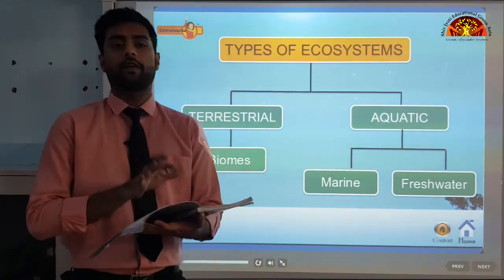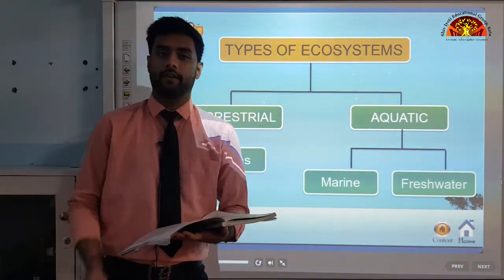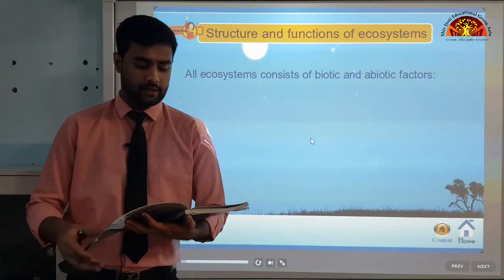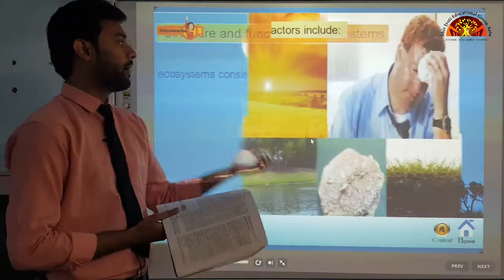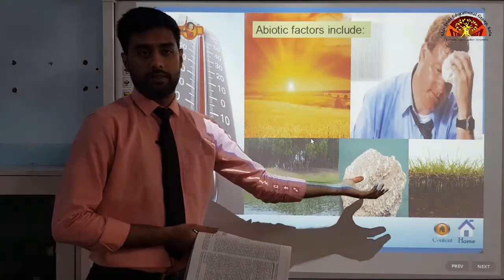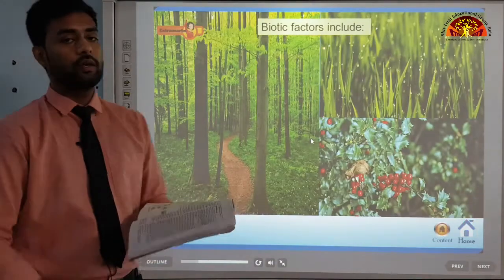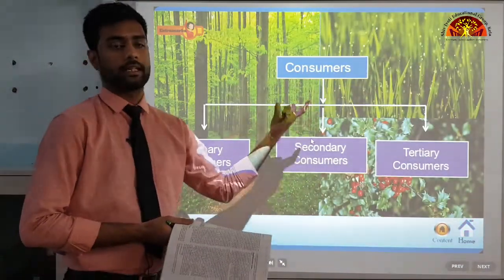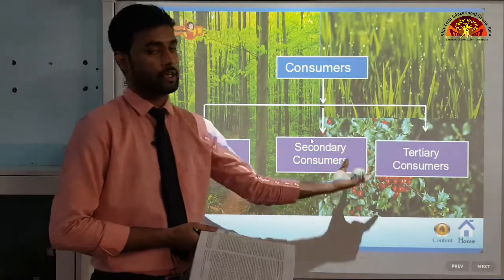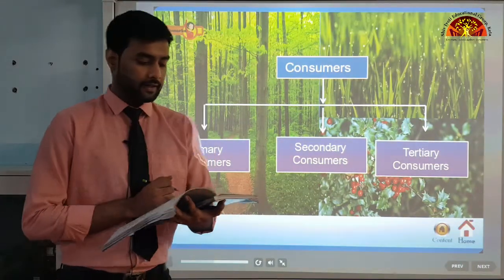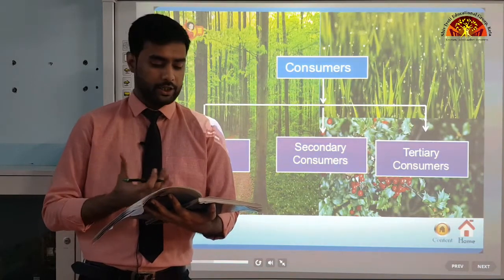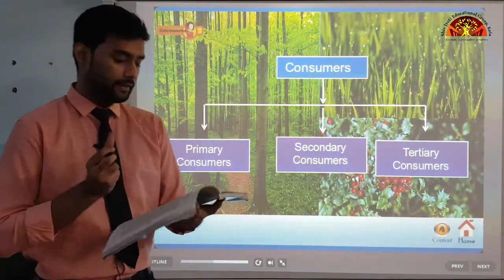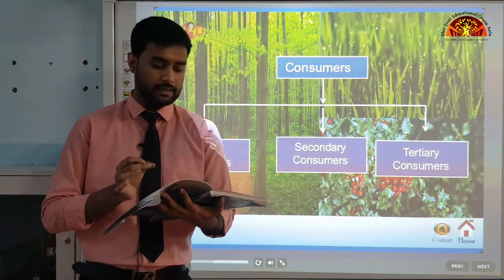Now let us study the structure and functions of an ecosystem. The structure of an ecosystem involves the description of available plant and animal species. From a structural point of view, all ecosystems consist of abiotic factors — temperature, moisture, land and soil — and biotic factors. Abiotic factors also include rainfall, sunlight, atmospheric humidity, soil condition, and inorganic substances such as carbon dioxide, water, nitrogen, calcium, phosphorus and potassium.